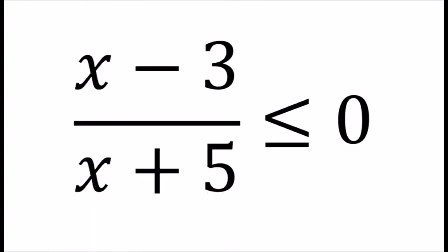Here's an example of a rational inequality. Now if you remember from our previous video, what we did was set the numerator and denominator equal to zero to find our points to put on a number line, and then we had to test each interval. I'm going to show you how to enter this rational expression into your calculator in order to test each interval.